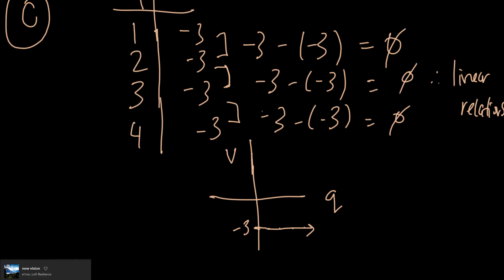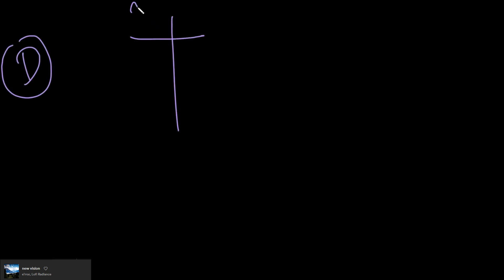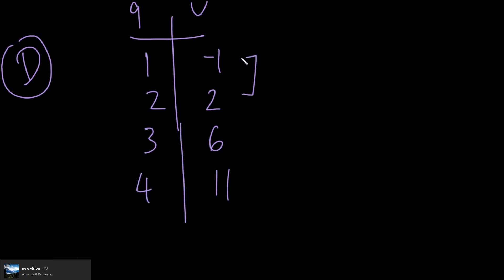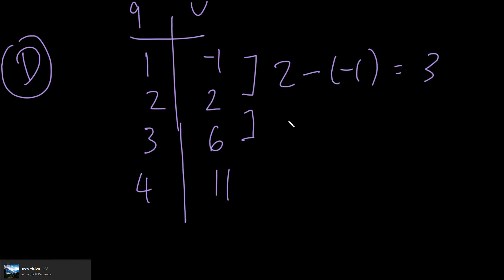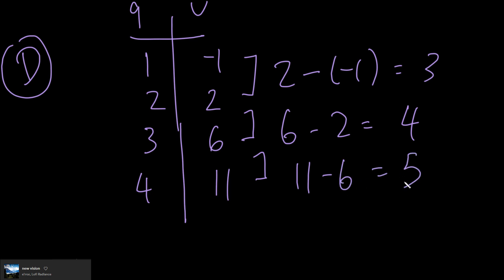Which means the only logical option left is D — but let's prove it. For option D, the values are: Q=1, V=-1; Q=2, V=2; Q=3, V=6; Q=4, V=11. Taking first differences: two minus negative one equals three. Six minus two equals four. And eleven minus six equals five. I have first differences of three, four, and five — they are not all the same, therefore this is non-linear. D is my answer.